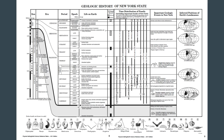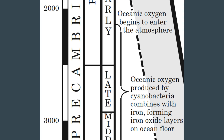Before we move on to life on Earth, it's important to take a closer look at something extremely significant in terms of the development of life. Oceanic oxygen produced by cyanobacteria combines with iron, forming iron oxide layers in the ocean floor. Later on, oceanic oxygen begins to enter the atmosphere, which is very important for oxygen-breathing organisms like ourselves. This starts to happen in the middle Archean and ends in the early Proterozoic — which is significant for life on Earth.